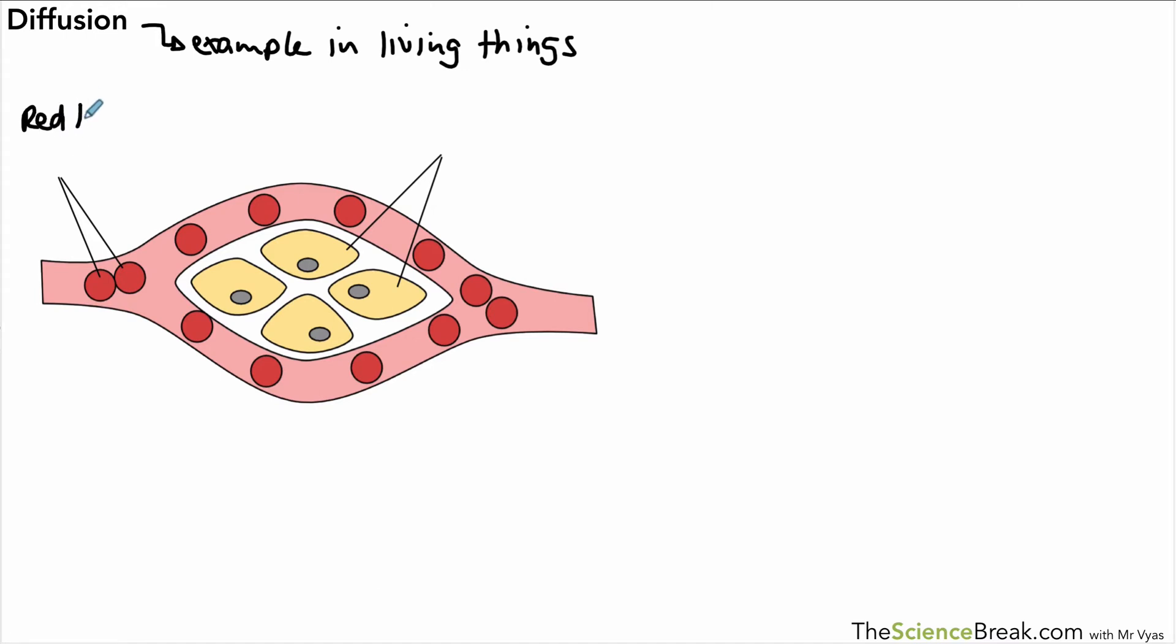In the capillaries we've got red blood cells, and you may remember that red blood cells carry oxygen. These are the body cells that need that oxygen. This blood has just come from the lungs, so it's collected oxygen that's been breathed in. The concentration of oxygen in the red blood cells is higher than in the body cells, so that oxygen is going to diffuse into the body cells from the red blood cells.